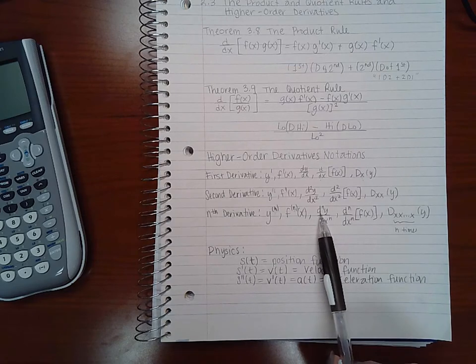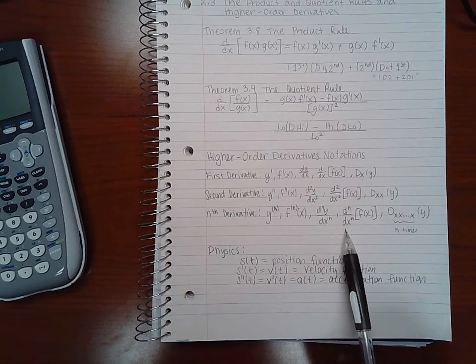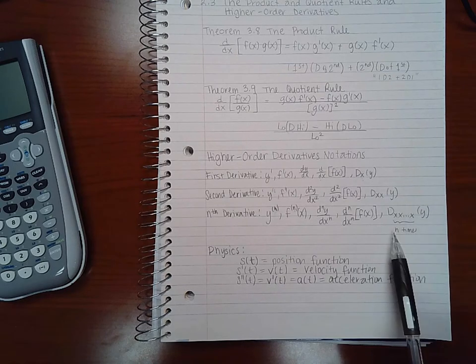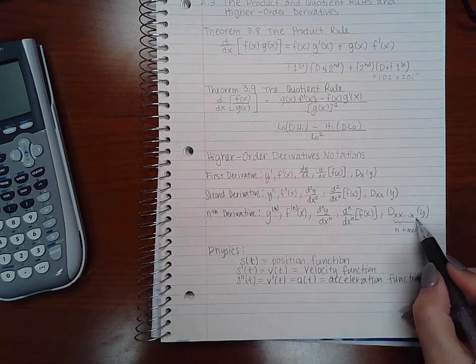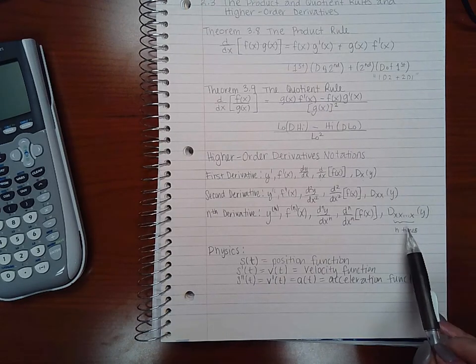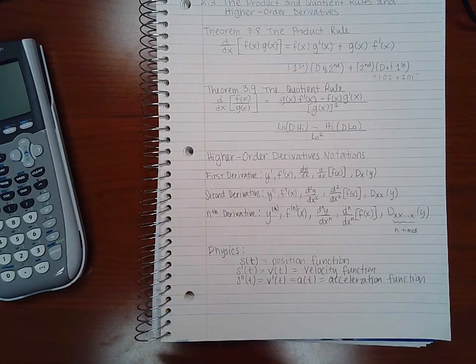Here it would be d with that number exponent, that number derivative, y dx that number of derivative. Same thing here, and then here however many times I'm taking the derivative, since it's n times there would be an n number of x's there. Or for example, if I'm looking for the tenth derivative, then I would have ten x's here of y.